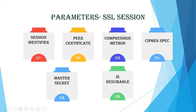The fifth parameter is master secret — a 48-byte secret shared only between the client and the server. The sixth parameter is 'is resumable' — a flag which indicates whether the session can be used to initiate any new connection or not, whether it can be resumed or not, and what state it is in. These are the parameters considering the architecture of SSL, which has two services — SSL connection and session — with different parameters associated with each.